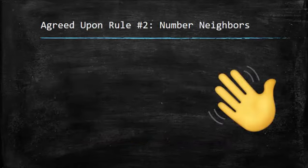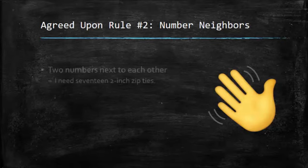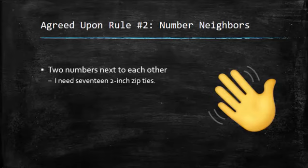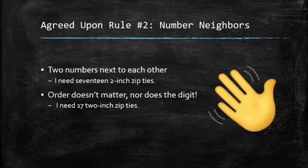Rule number two says if we have number neighbors. So if you were trying to write something like I need 17 two-inch zip ties, you could write it out like this. You have one of the numbers written out, in this case 17, and then we decided to write two in shorthand or as a numeral. The thing is that the order doesn't matter, so we can say the same sentence and write it a different way. It's really all about preference when it comes to number neighbors.